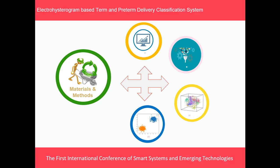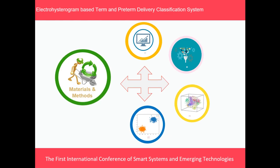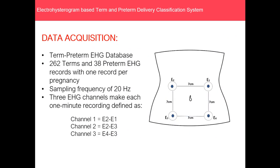Moving forward to materials and methods, the dataset used was taken from the term-preterm EHG database of VisioNAT. It contained 262 term and 38 preterm EHG records, with one record per pregnancy. The sampling frequency of each record was 20 Hz, and three EHG channels were used to make each one-minute recording.